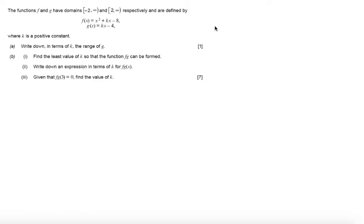g have domains minus 2 to infinity and 2 to infinity respectively and are defined by f(x) equals x squared plus kx minus 8 and g(x) equals kx minus 4.